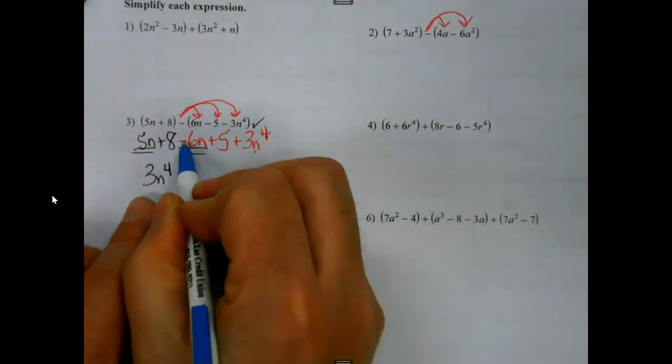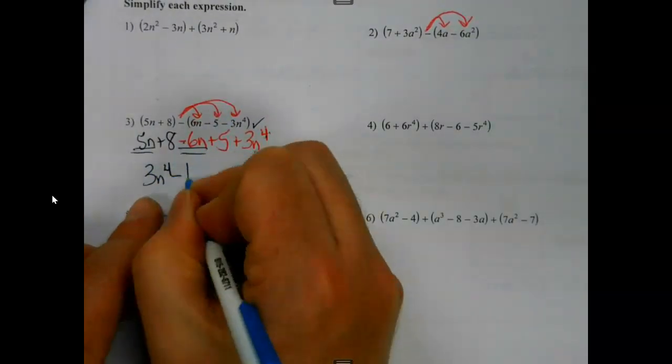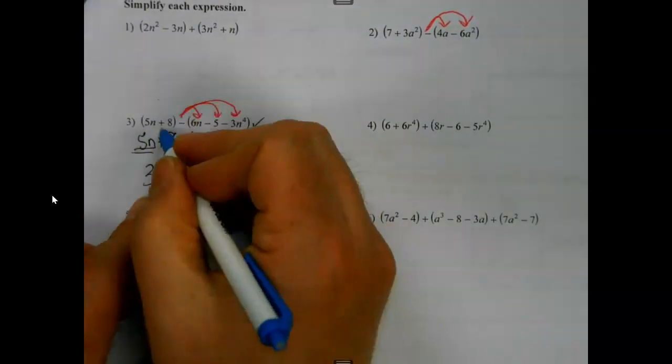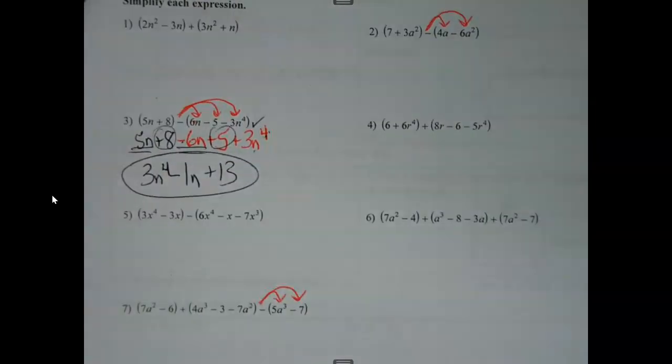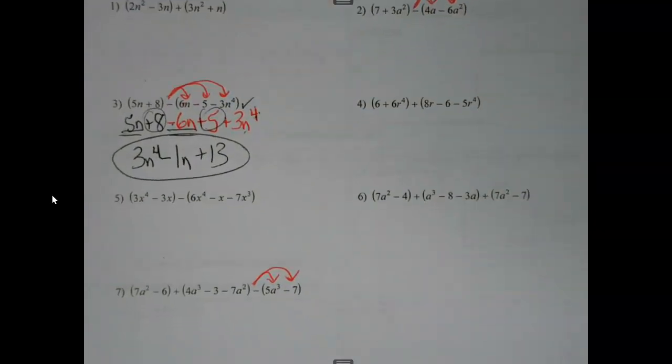5n minus 6n. Watch your signs. Negative 1n. And 8 plus 5 is 13. That's all you're doing in the first part. A little distributing if there's a minus. But if there's not, just combine things. Just go ahead and keep writing them in. No big thing there.